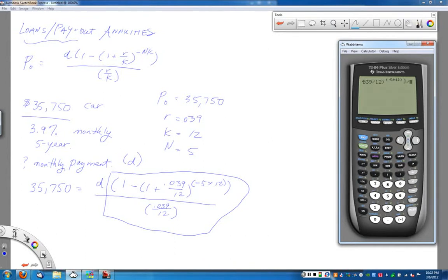And then close the parentheses for the top of the expression. Then I want to divide that. On the bottom, I have 0.039 divided by 12. Type that in. Close your parentheses. Hit enter. And I've got this value here that's next to the D.